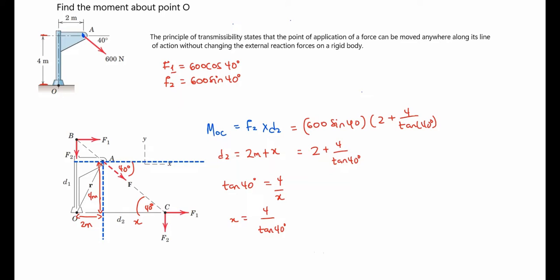Let's see what we get: 600 sine of 40 degrees multiplied by 2 plus 4 over tan 40 gives us 2609.85 newton meters, which I'll round to 2610 newton meters — just as I did for point B. You see that both points give the same answer. For the previous examples I didn't write them to two decimal places, which is why I rounded up to get this value. Thank you very much for watching this video.